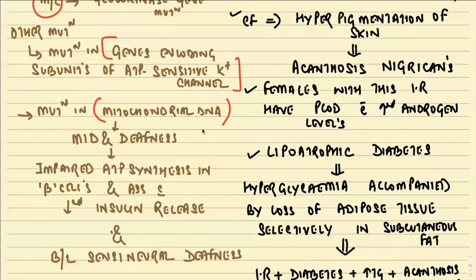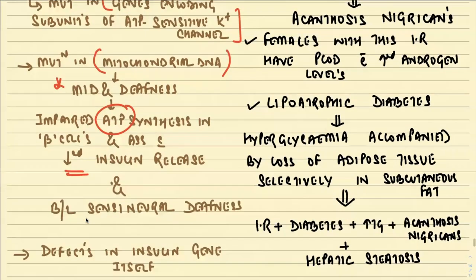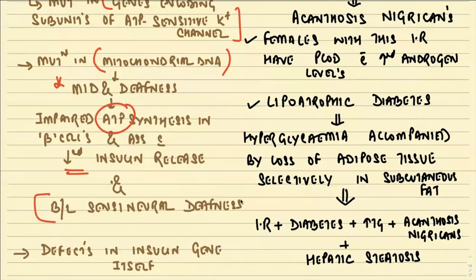Individuals with mitochondrial DNA mutation have maternally inherited diabetes and deafness, with impaired ATP synthesis in beta cells associated with decreased insulin release. Such individuals also have bilateral sensorineural deafness — a very important MCQ. The most common type of MODY is MODY type 3, which involves mutation in the HNF1-alpha gene.